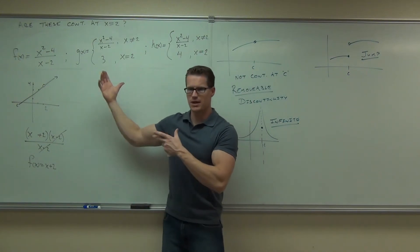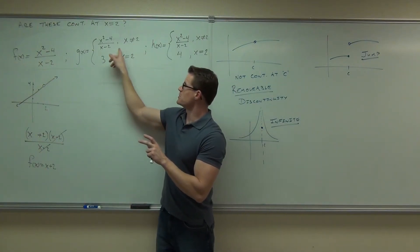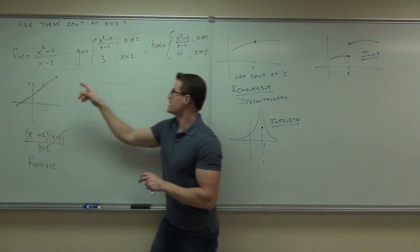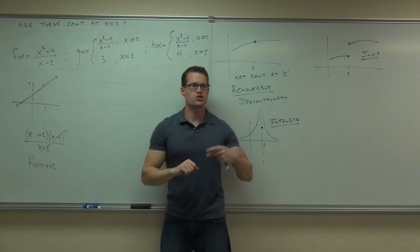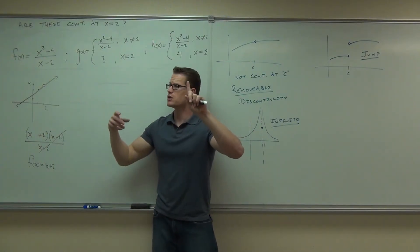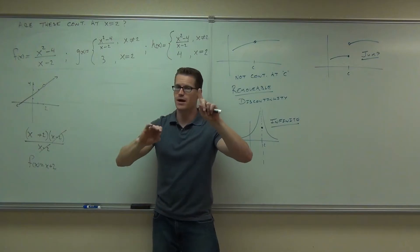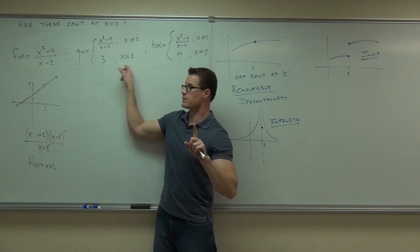These look confusing, but here's all this says. This says, for everywhere except 2, you're now this thing. We have that here. But now, at 2, I have a point 3. So let's check the continuity now. Is number 1 satisfied? Is the function defined at my point x equals 2? Absolutely. Absolutely. It's right here. That's the definition.